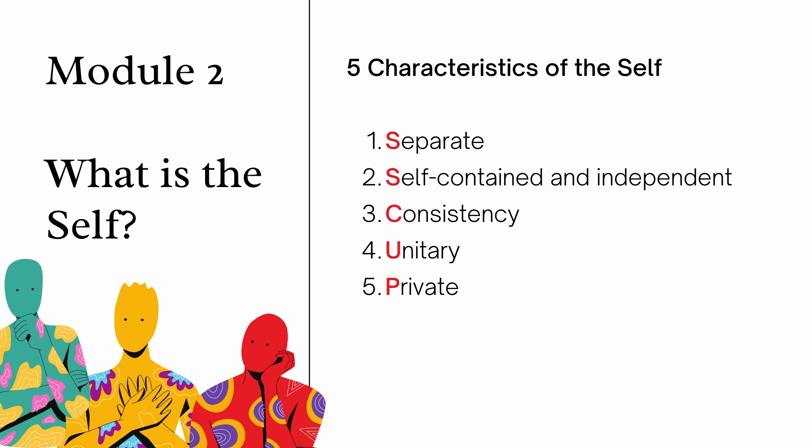Number three, the self is consistent. This means that our traits, personality, characteristics, tendencies, and potentials are more or less the same. For example, Pedro is known to be an honest person — at home he is an honest child — so it is expected that in almost every situation, whether at the playground or elsewhere, Pedro is expected to exhibit the same trait: honesty.